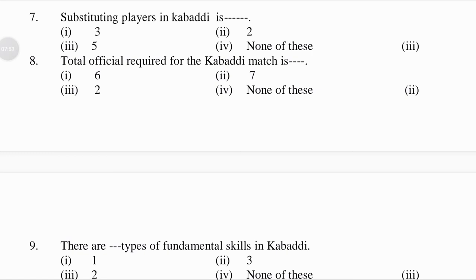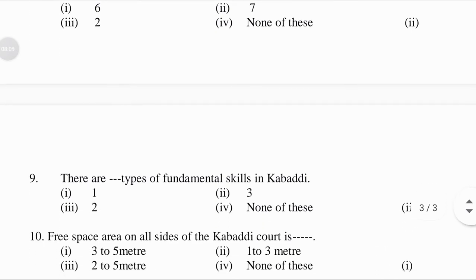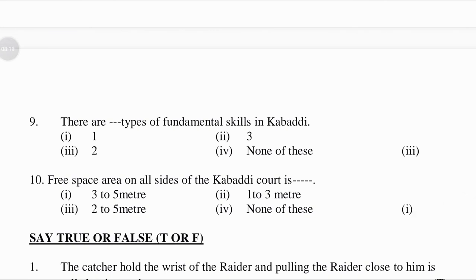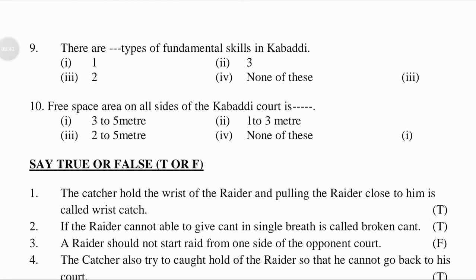Substituting players in Kabaddi — first option 3, second option 2, third option 5, fourth option none of these. Answer: third option, 5. Total officials required for a Kabaddi match — first option 6, second option 7, third option 2, fourth option none of these. Answer: second option, 7. There are how many types of fundamental skills in Kabaddi — first option 1, second option 2, third option 3. Answer: third option, 3. The space area on all sides of the Kabaddi court — first option 3 to 5 meter, second option 1 to 3 meter, third option 2 to 5 meter. Answer: first option, 3 to 5 meter.